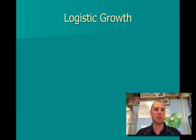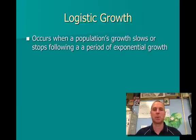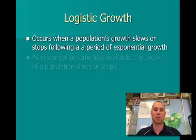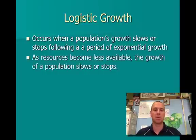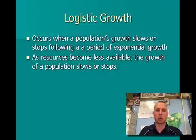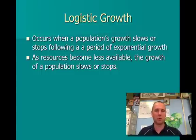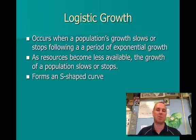The way most populations grow is called a logistic growth curve. A logistic growth curve is when a population grows and then stops after a period of exponential growth. As resources become less available, the growth of the population is going to stop. A population can't continuously grow indefinitely if there's a chance of running out of food, shelter, etc. This is called an S-shaped curve.